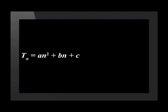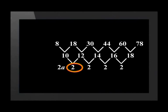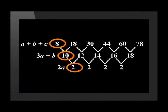Now, let us quickly revise how to find the general term of a quadratic sequence. We will use the same sequence. The nth term of a quadratic sequence is given by an squared plus bn plus c. We have formulae we can use to calculate the values of a, b, and c. 2a is equal to the second constant difference. 3a plus b is equal to the first term of the first difference. And a plus b plus c is equal to the first term of the given sequence.